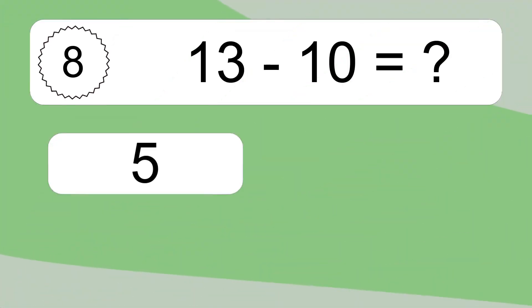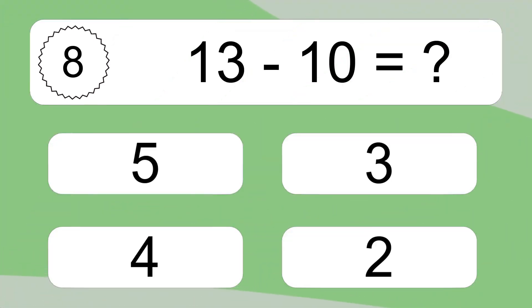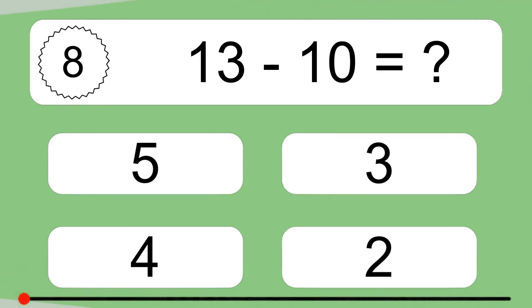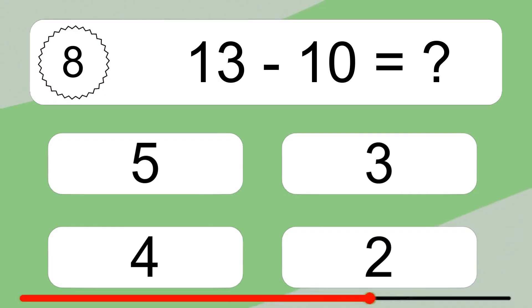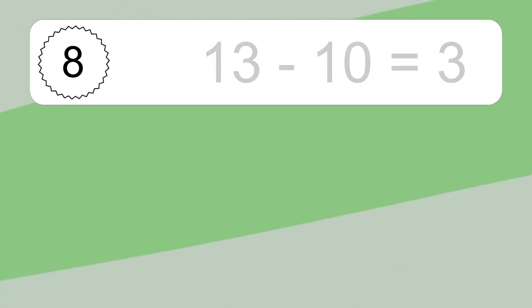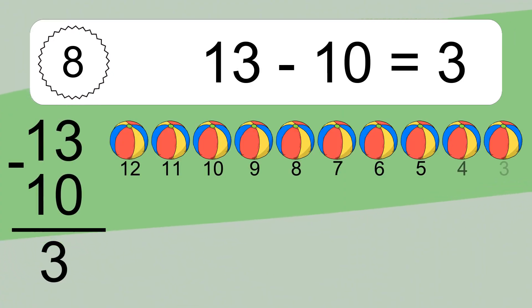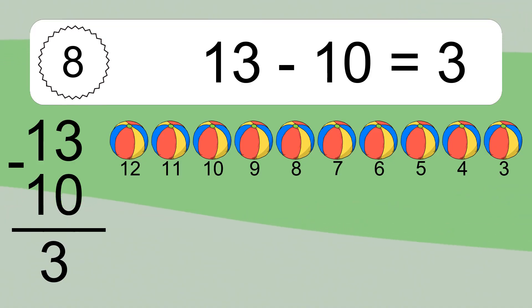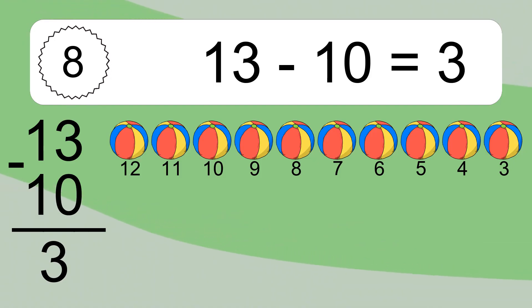13 minus 10 equals what? 13 minus 10 equals 3. Let's count it: 12, 11, 10, 9, 8, 7, 6, 5, 4, 3.